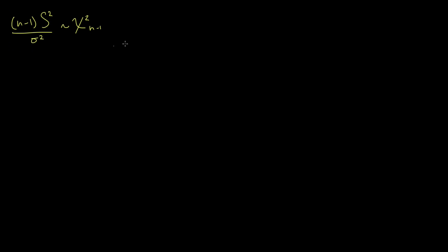This is probably one of the bigger leaps of faith in introductory statistics. We sort of got close to showing that this was the case, but sort of waved our hands a little bit. We're going to run through why this is the case — why it turns out that this is going to be chi-square distributed with n minus 1 degrees of freedom.